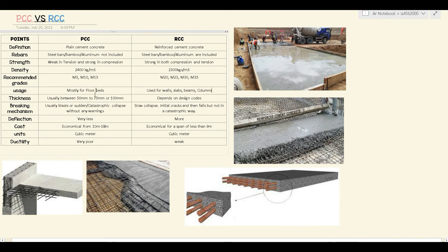For deflection, PCC has very little deflection, while RCC has more deflection. Deflection is linked with the tensile strength of the steel bars — it deflects and doesn't suddenly break because of the steel bars. There's no catastrophic bending; it bends very slowly, which is called deflection.